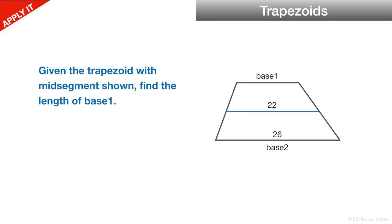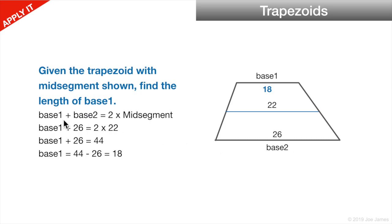Let's do a practice problem. Given the trapezoid with the mid-segment shown, find the length of base 1. The mid-segment equals the average of the two bases, so base 1 plus base 2 equals 2 times the mid-segment. Base 2 is 26, and the mid-segment is 22, so base 1 plus 26 equals 44. Therefore base 1 equals 18.